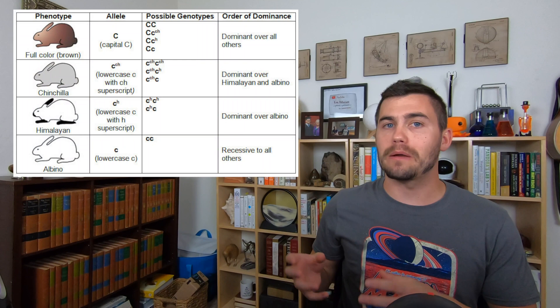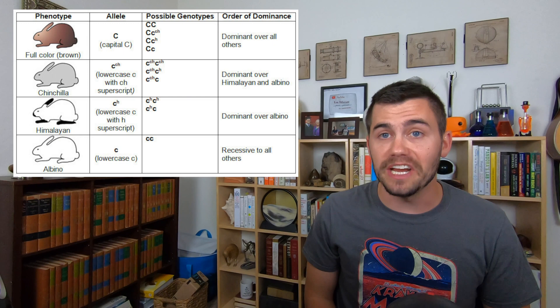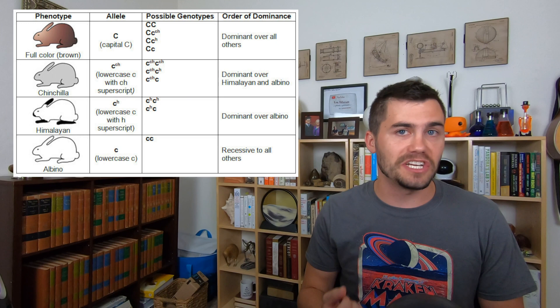There are four different alleles with a hierarchy of dominance. The allele for a brown coat is dominant over all other alleles. This means there are four different genotypes that still give the rabbits the brown coat.